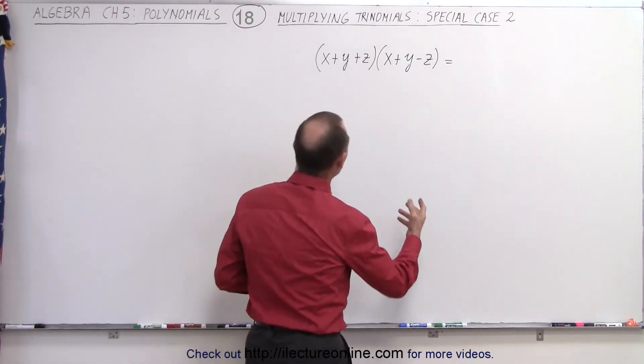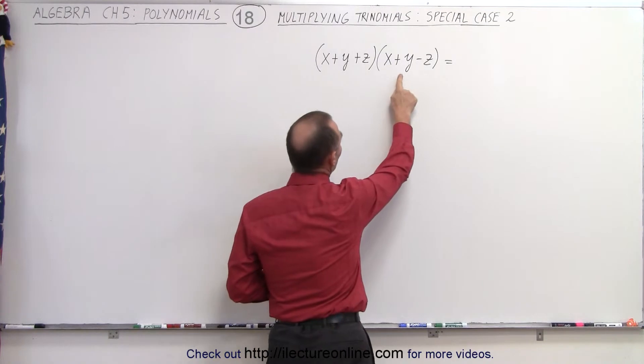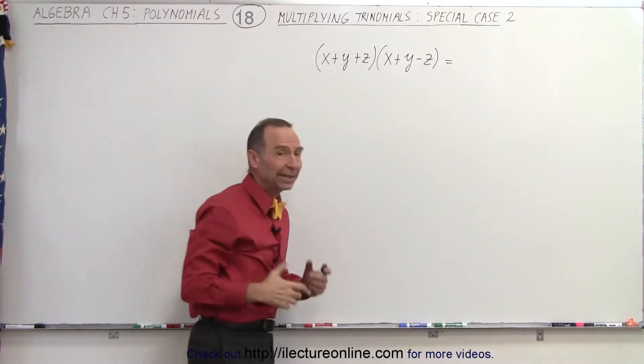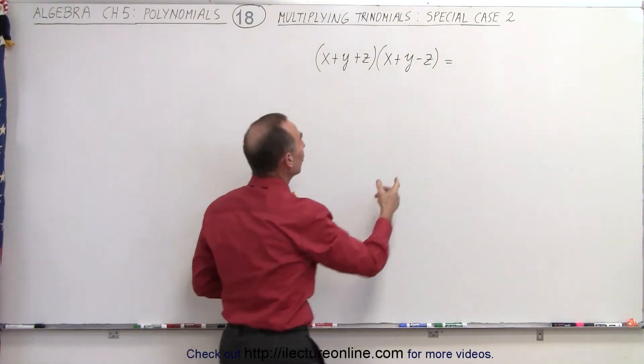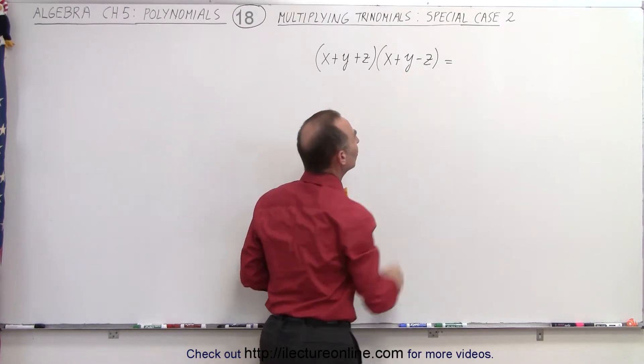They were identical. We had x plus y plus z times x plus y plus z, but in this example, case 2, we have the second trinomial as x plus y minus z.